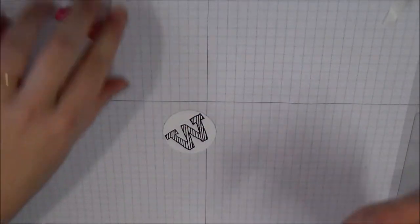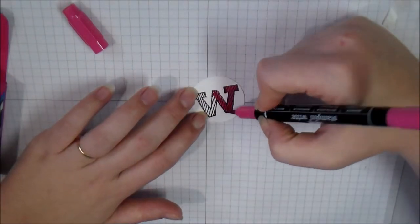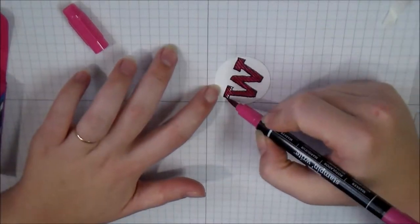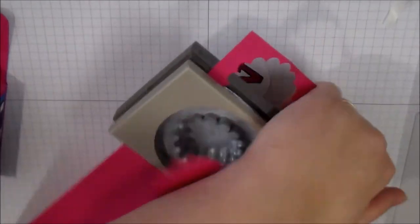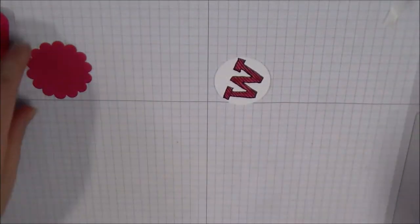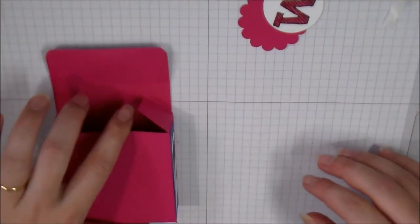So I punch out that W with a 1 and 1/2 inch circle punch. I'm coloring it with my Melon Mambo Stampin' Write marker, and now I'm taking a 1 and 3/4 inch scallop punch and doing that so I have my layer pieces.